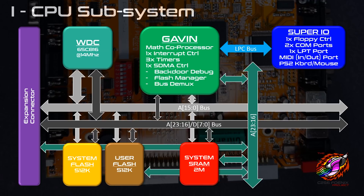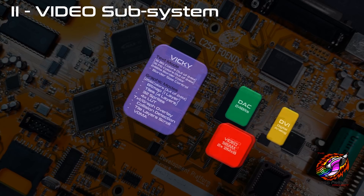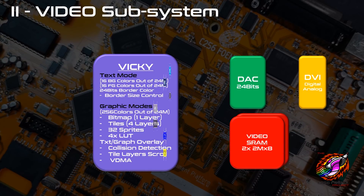Within Gavin, there's an interrupt controller, a MAT coprocessor block, three timers, a system DMA controller, a background debug mode that I'll talk about eventually, the flash boot manager, and it takes care of the bus demuxing from the 65816. If anybody from WDC hears this — please come up with a version where the bus is already demuxed. That would simplify my life tremendously. The SuperIO controls the floppy controller, COM ports, LPT, and more — you can read the slide.